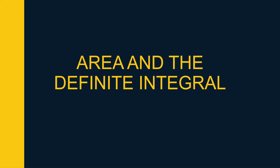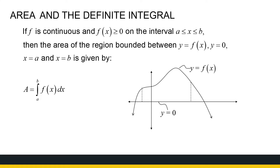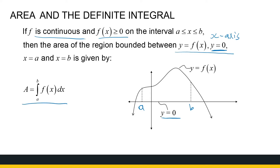We're now going to link the concept of areas under curves, or between curves, with the definite integral. So if we've got a continuous function that's positive or zero — above the x-axis — and here we see the x-axis equation is just y equal to zero. I'll show you later why we're considering that. If I'm looking at the area between interval a and b, and my function is positive, then the area bounded between that graph and y equal to zero, or the x-axis, between x equal to a and b, is given by the definite integral from a to b of that function.